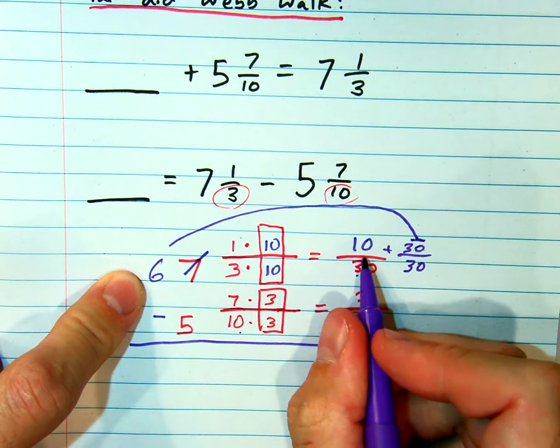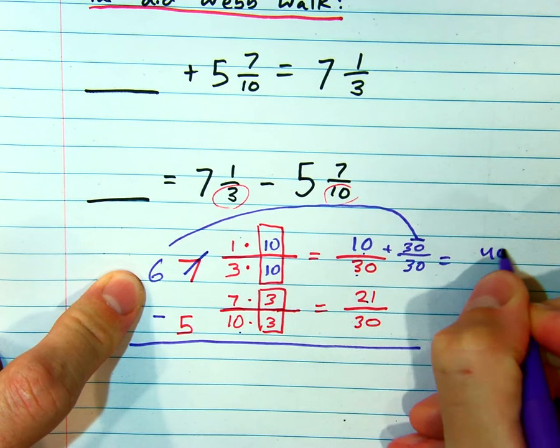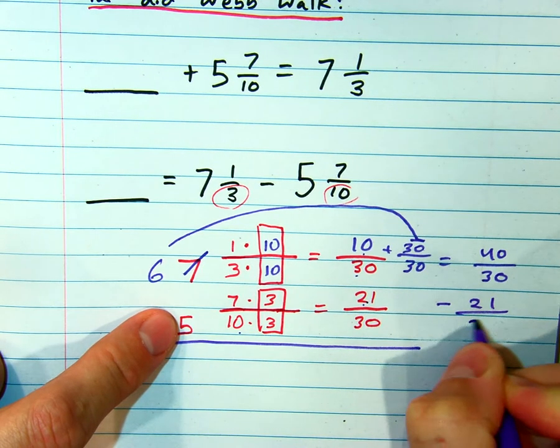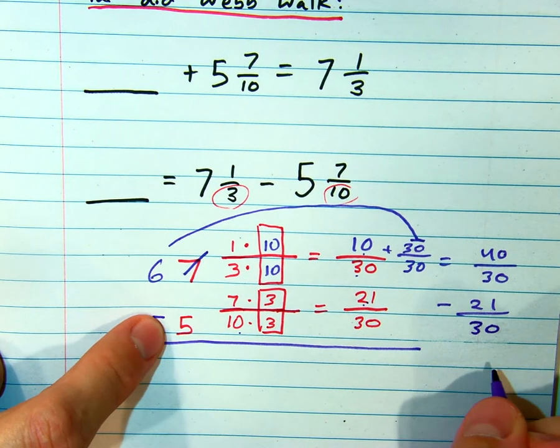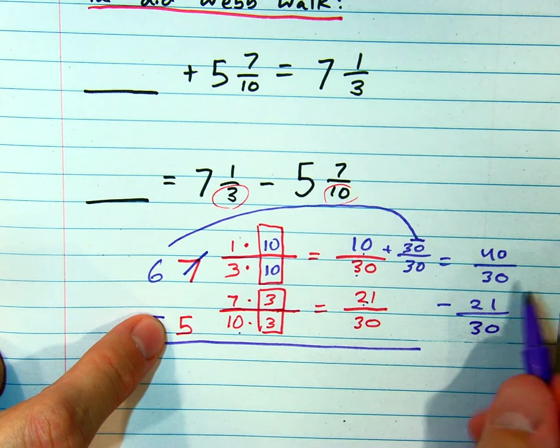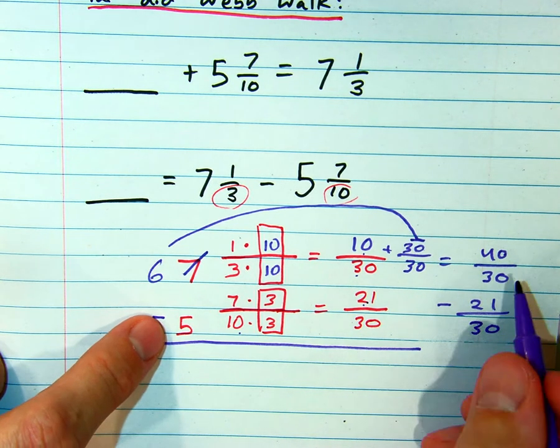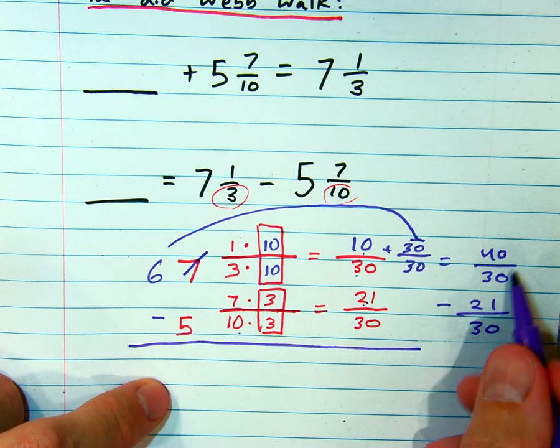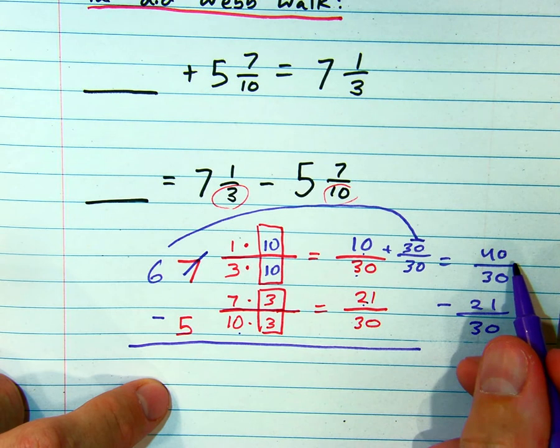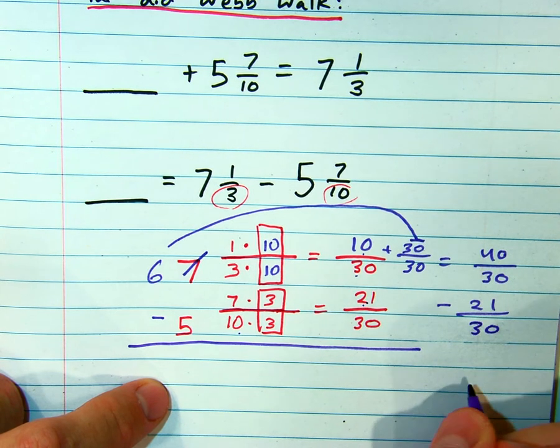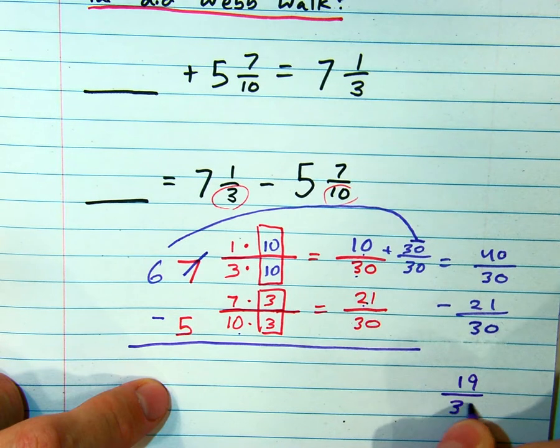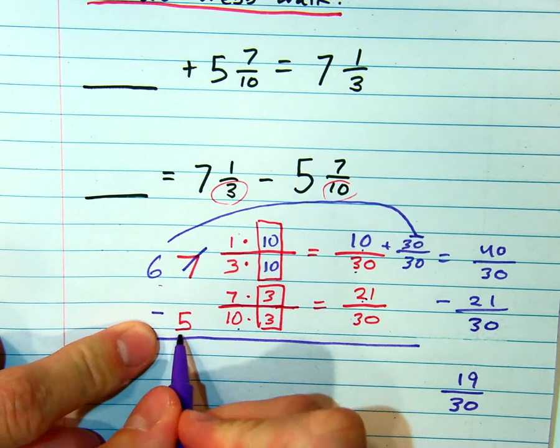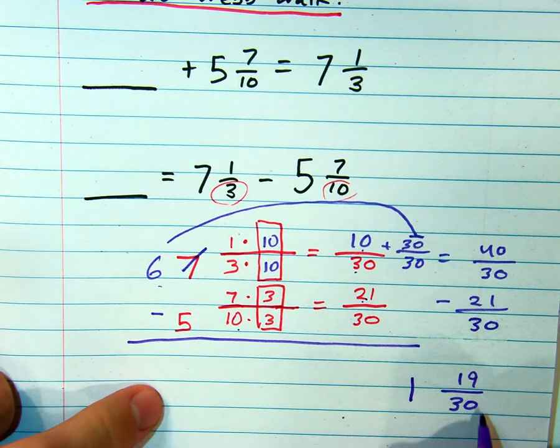Let's add it up. Ten plus thirty is forty over thirty. Now can I subtract twenty-one? Yes. Forty take away twenty-one. What do you get? We can round that and estimate. This is where our estimating comes in. Twenty-one is about half of forty. So it's going to be around half. Half of forty is twenty. It would be one less. So we'll end up with nineteen thirtieths. Nineteen thirtieths. Six minus five is one. Don't forget about your whole number. So I can say it's one and nineteen thirtieths.